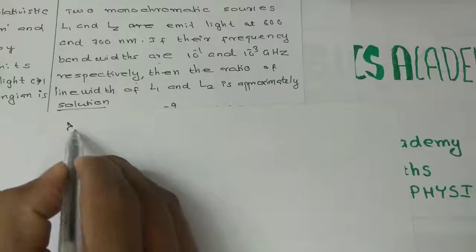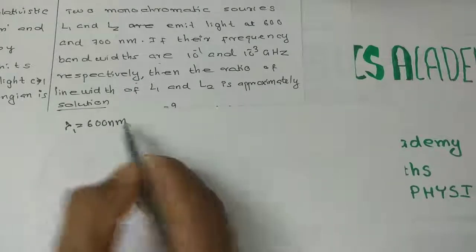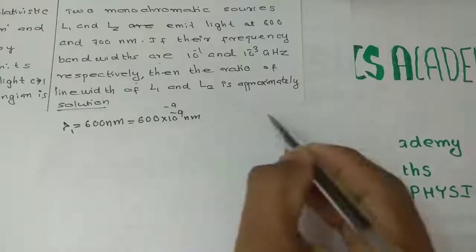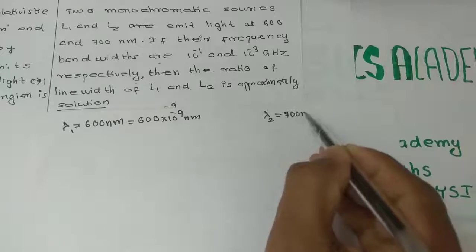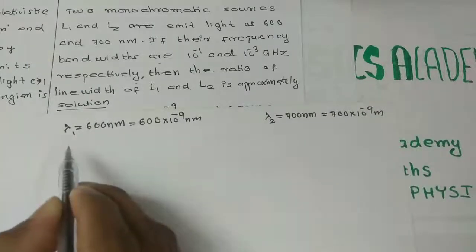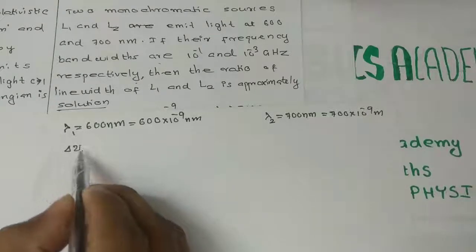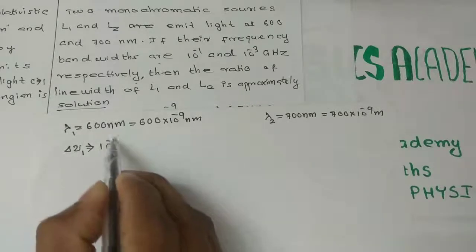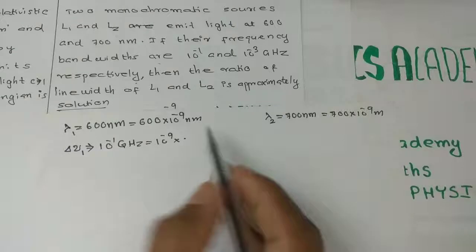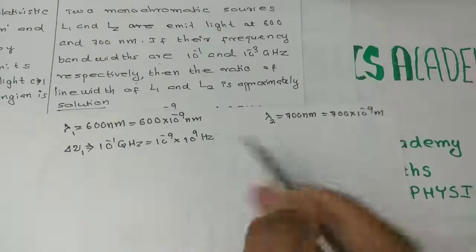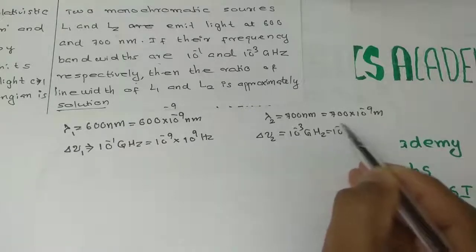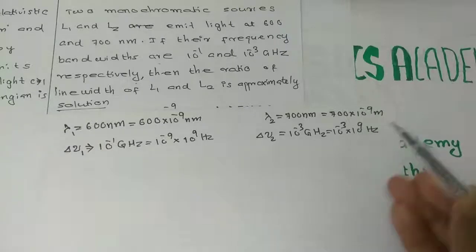We set up the values: lambda 1 is 600 nanometers, equal to 600 into 10 to the minus 9 meters. Lambda 2 is 700 nanometers, equal to 700 into 10 to the minus 9 meters. The frequency bandwidths are: delta-nu 1 equals 10 to the minus 1 gigahertz, which is 10 to the minus 1 into 10 to the 9 hertz, and delta-nu 2 equals 10 to the minus 3 into 10 to the 9 hertz.